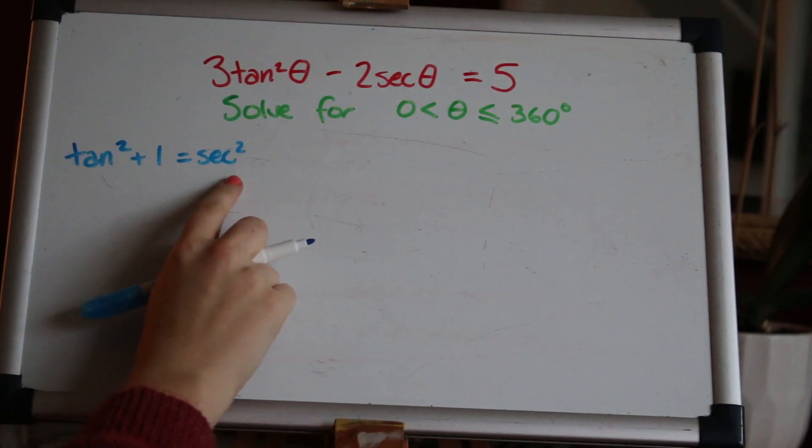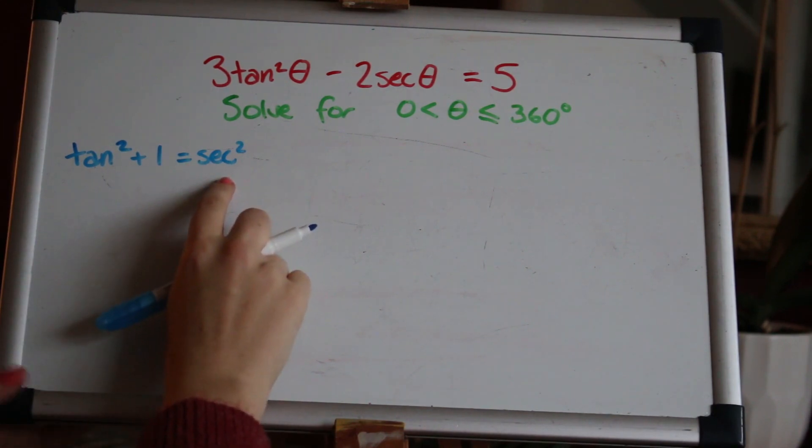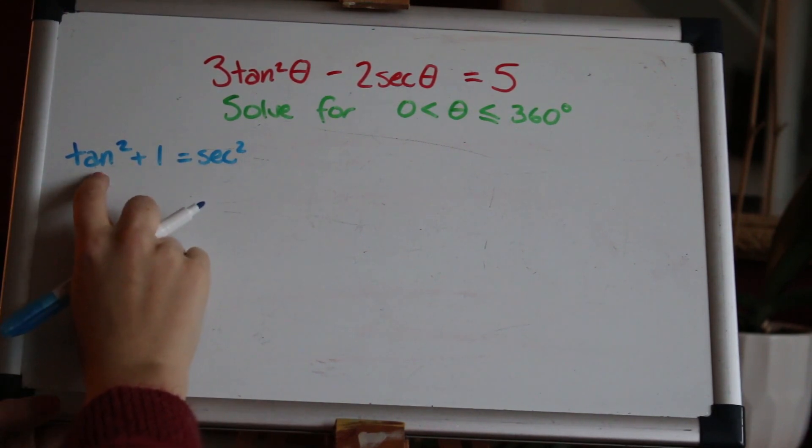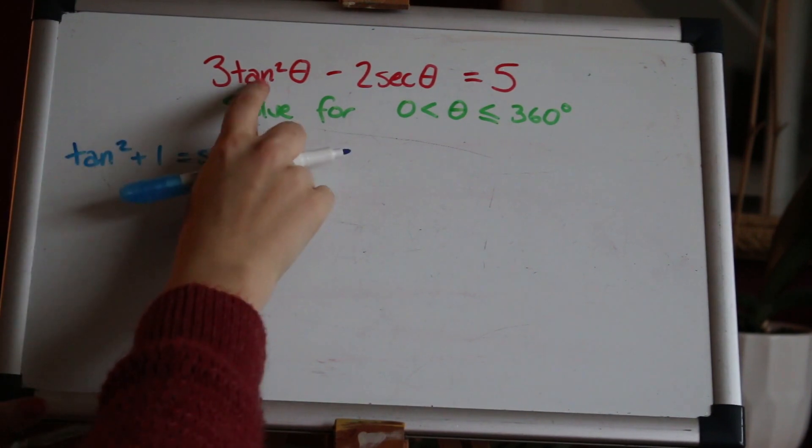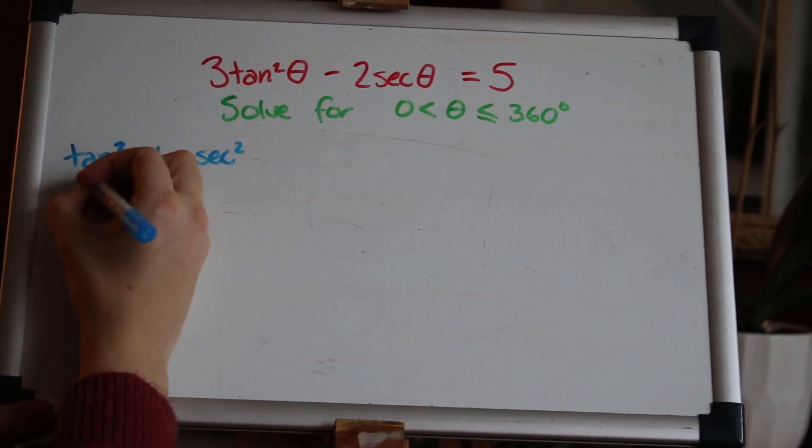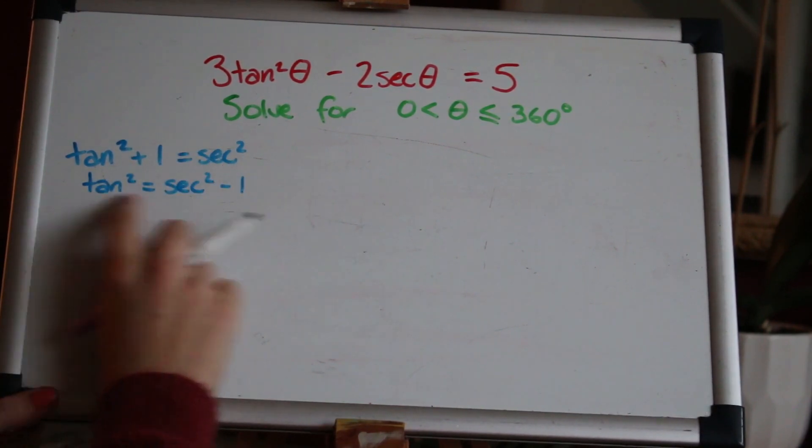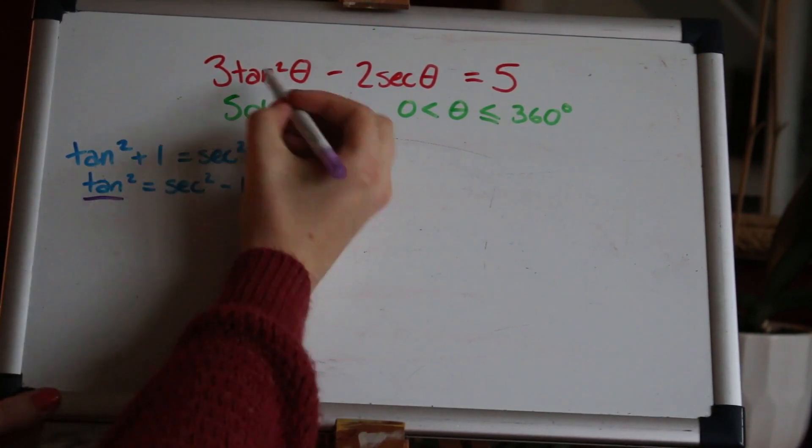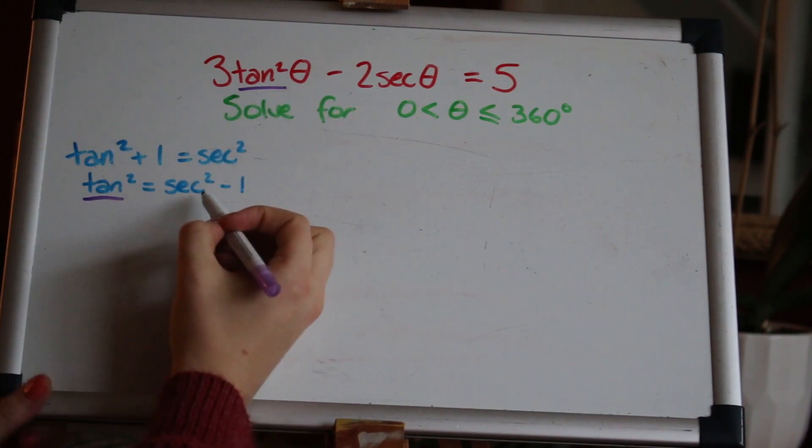This is the identity tan²θ + 1 = sec²θ, I'm just going to write it at the side and I've dropped the thetas for now. But we want tan² so I'm going to just rearrange that and substitute it in. So we want tan² I'll make that the subject: tan² = sec² - 1. And now I can substitute tan² in the equation for sec² - 1.